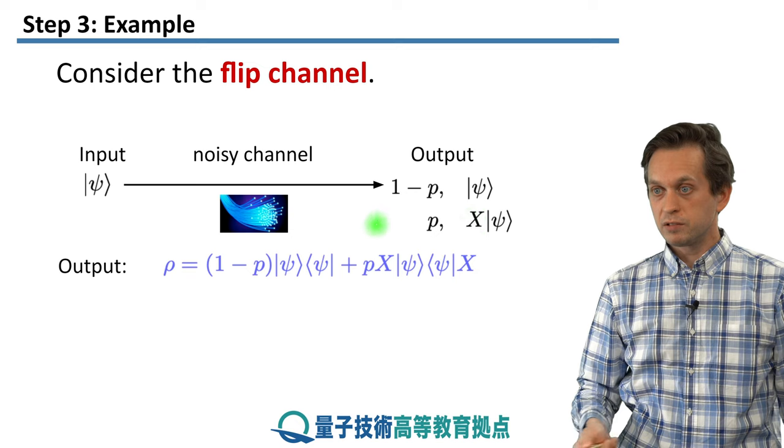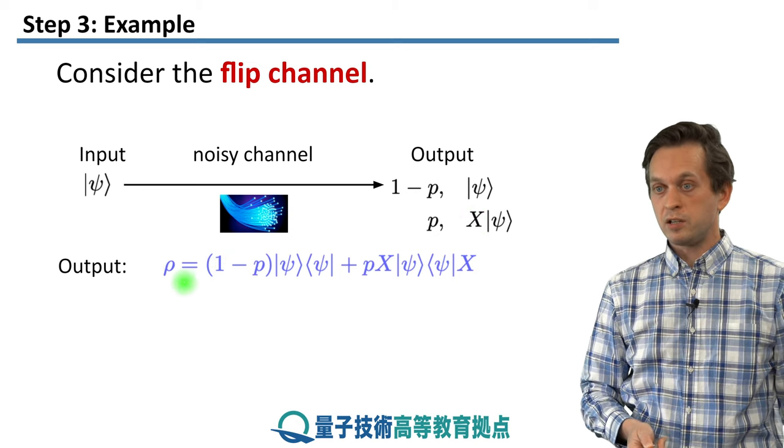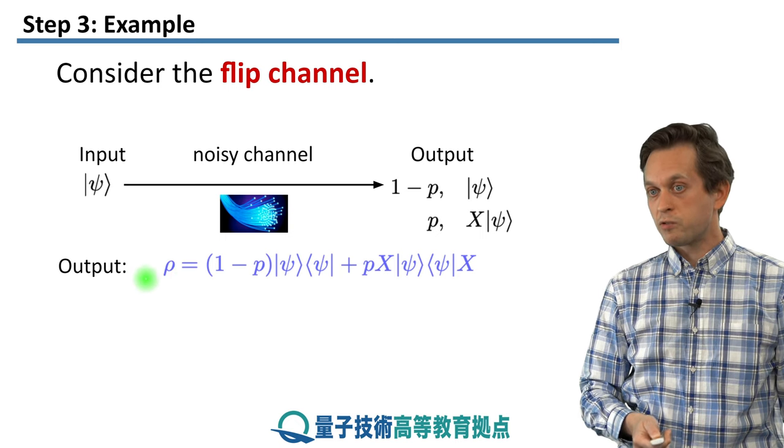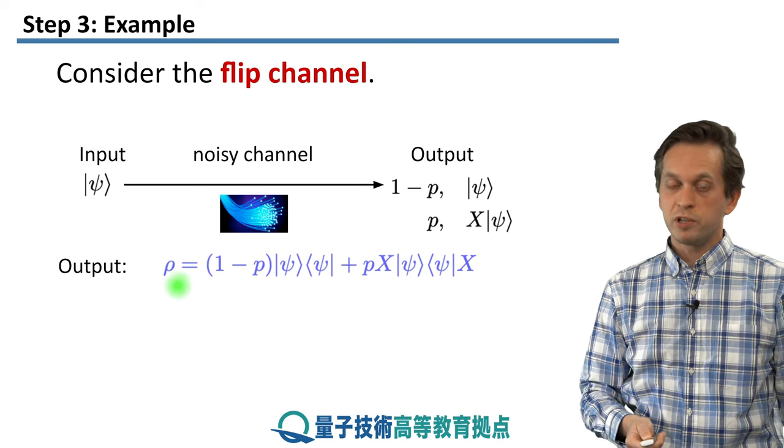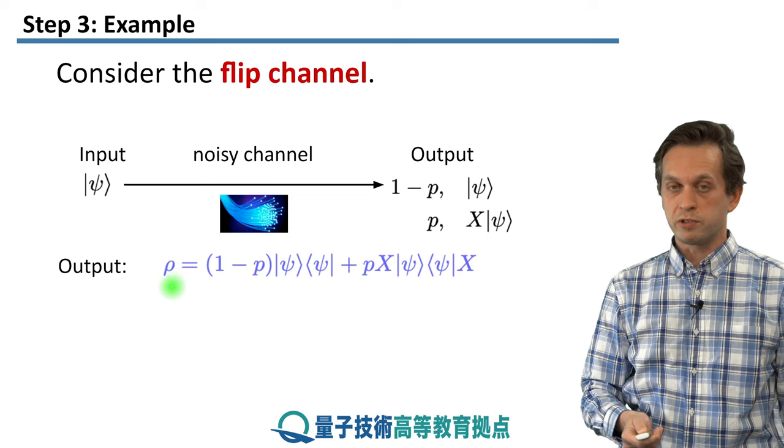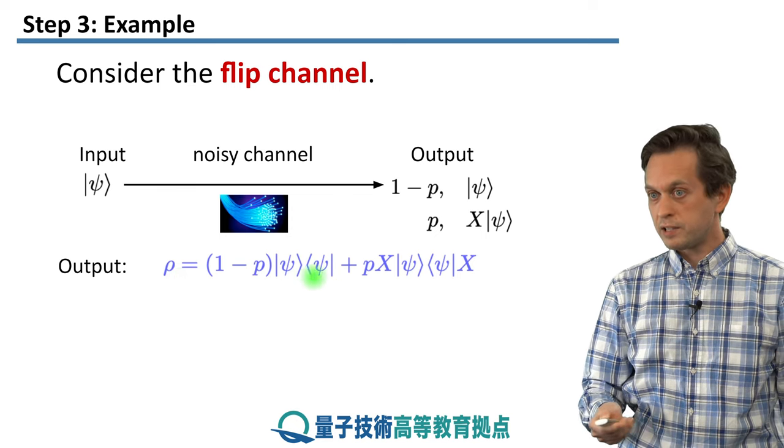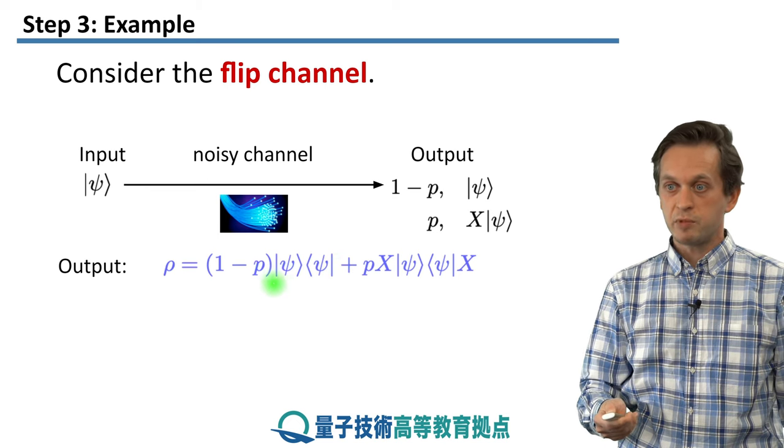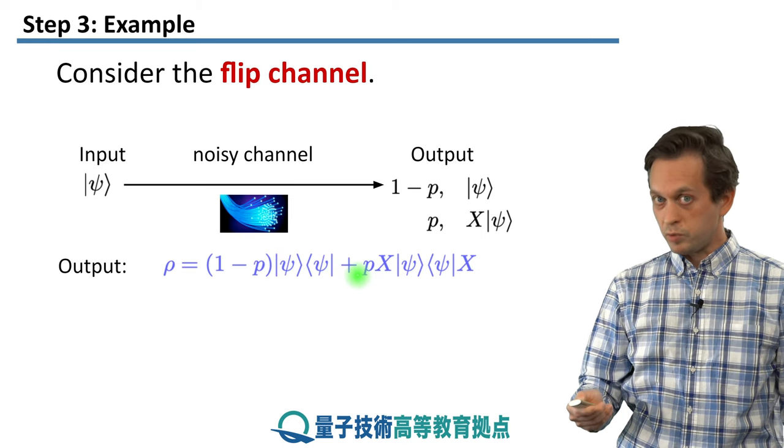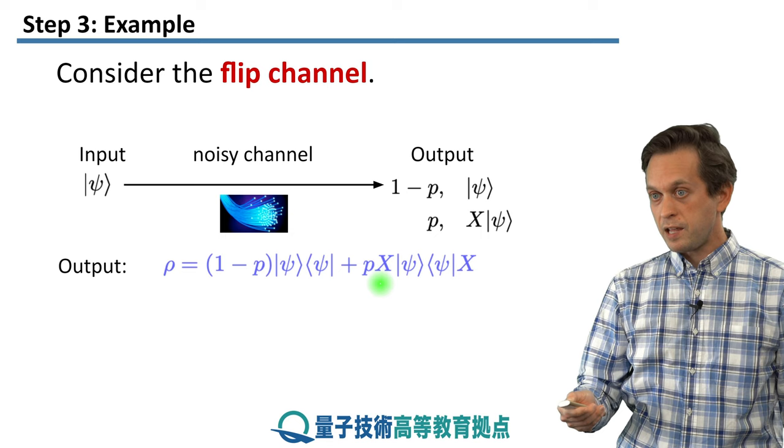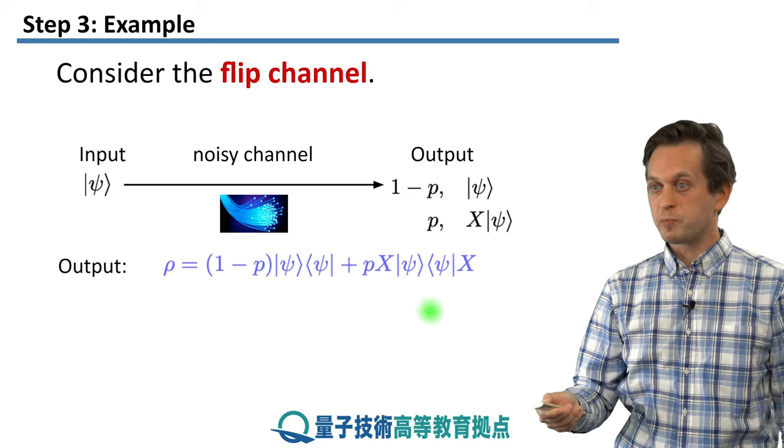And this is the description. This is the correct description of our output state. Now, because the state is not pure anymore, it's a mixed state, we tend to write it down without the ket symbol. And we normally use small Greek letters such as rho or sigma. So the output E in here can be represented as this. The probability that the state has not changed, which is 1 minus P, times the projection onto state psi, plus the probability P that we did flip the state, and X acting on psi, and also X acting on the bra of psi.